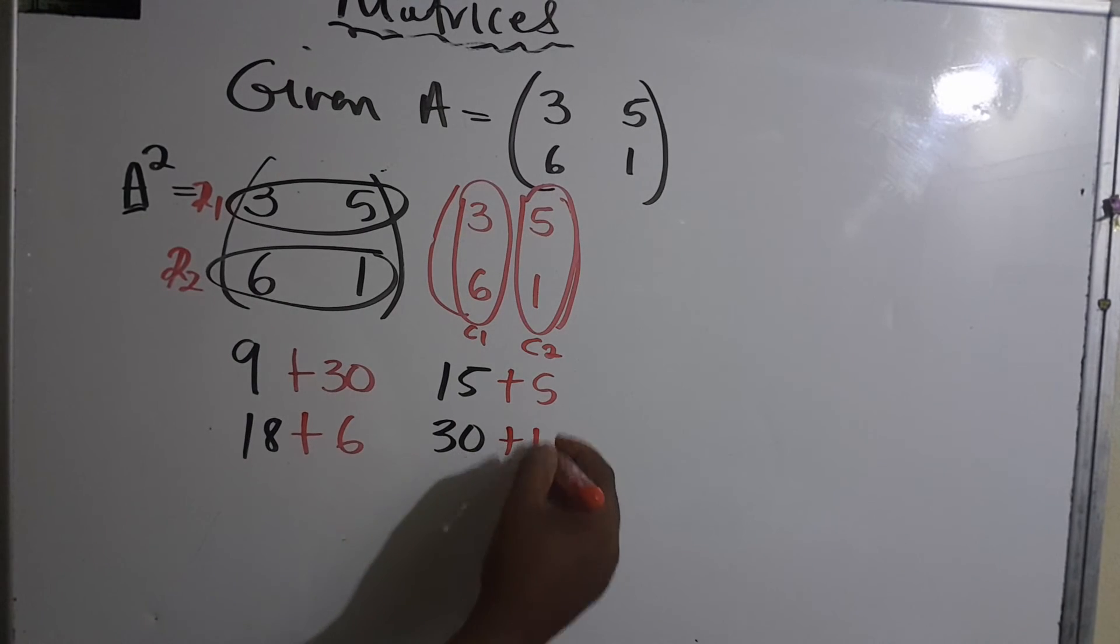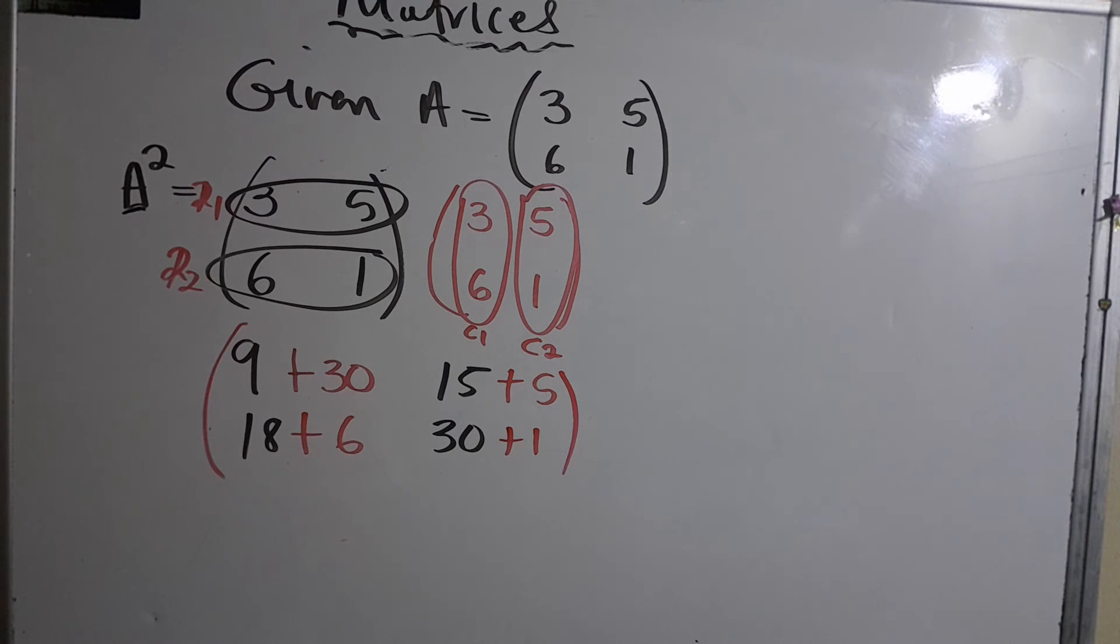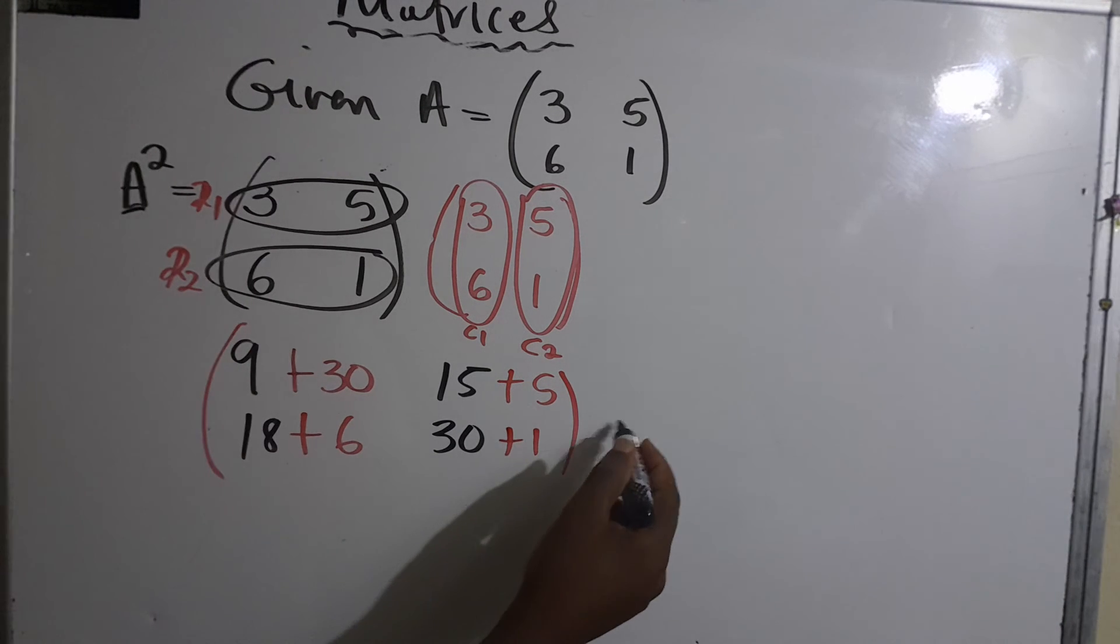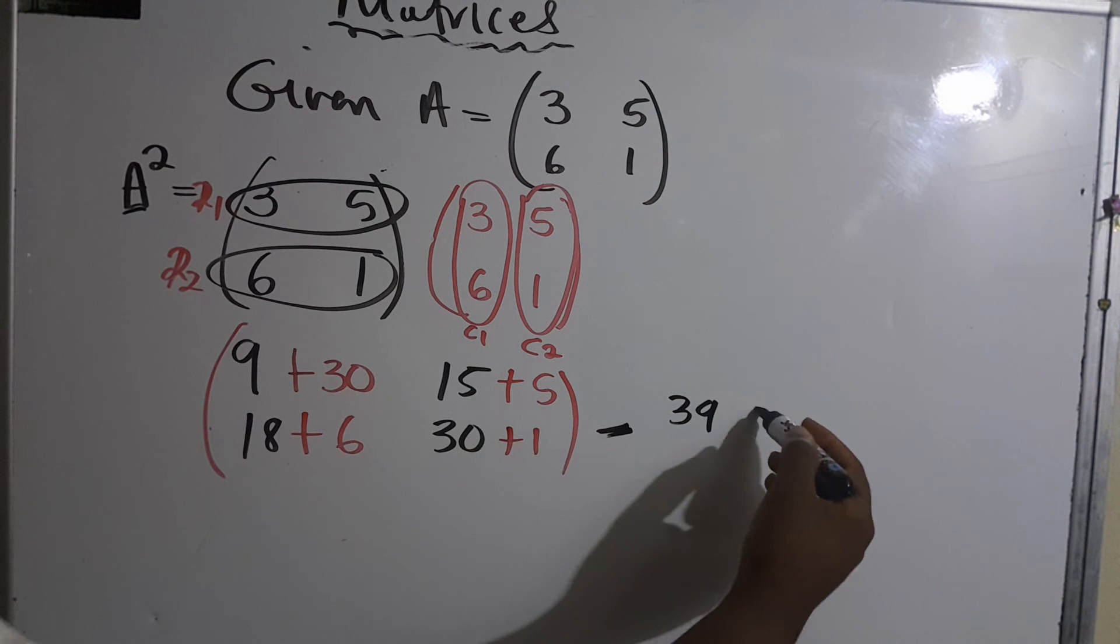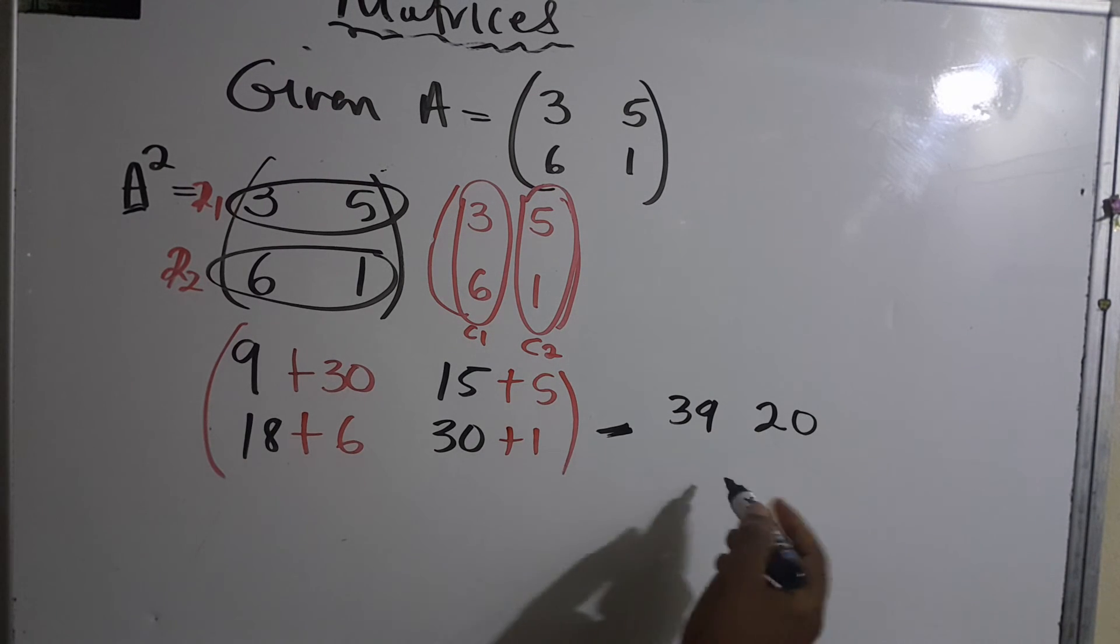We don't make this look hard, guys. As I tell my students, it's a very nice topic. Nine plus 30 is 39. Fifteen plus 5 is 20. Eighteen plus 6 is 24, and 30 plus 1 is 31.